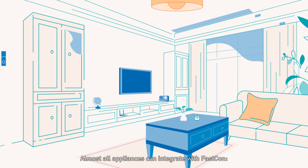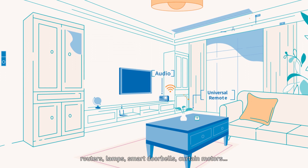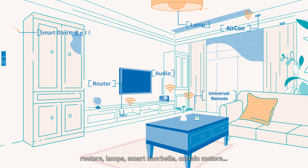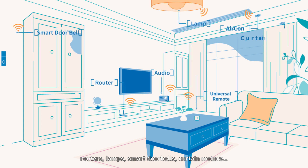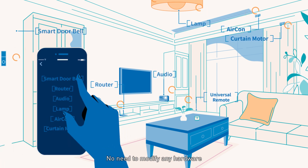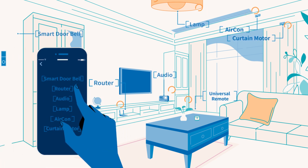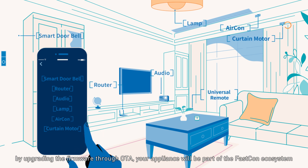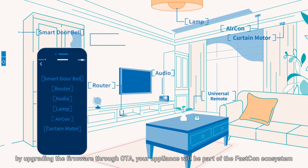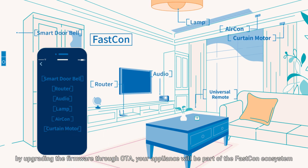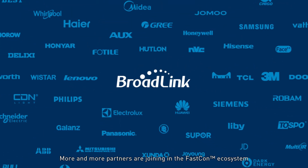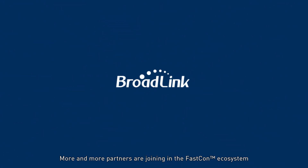Almost all appliances can integrate with FastCon: routers, lamps, smart doorbells, curtain motors. No need to modify any hardware. By upgrading the firmware through OTA, your appliance will be part of the FastCon ecosystem. More and more partners are joining the FastCon ecosystem. Together, let Broadlink build your ideal smart life.